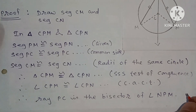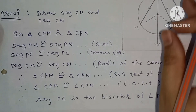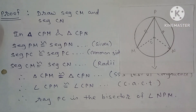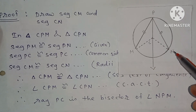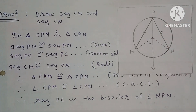These two angles are congruent, therefore ray PC is the bisector of angle NPM. Thanks for watching the video. Please like, share and subscribe to my channel for more videos.